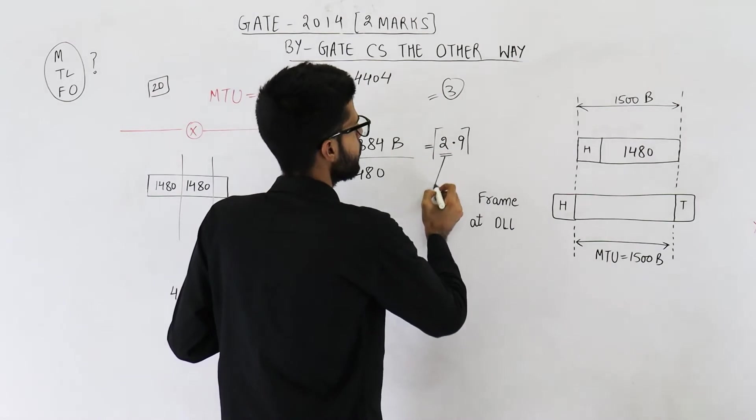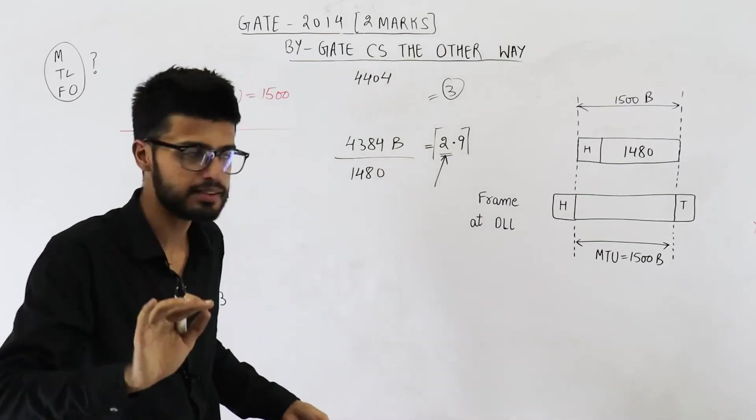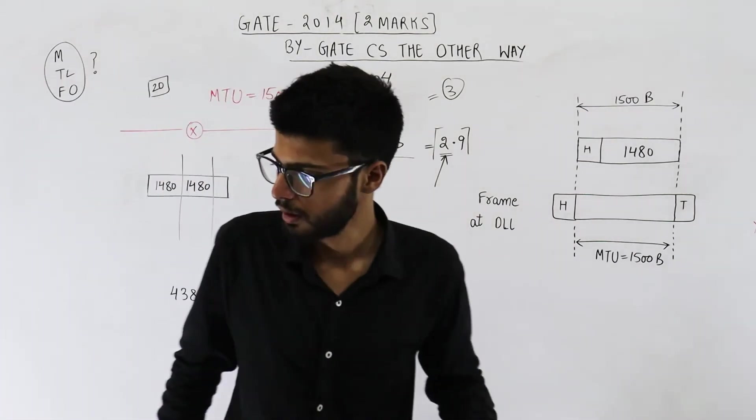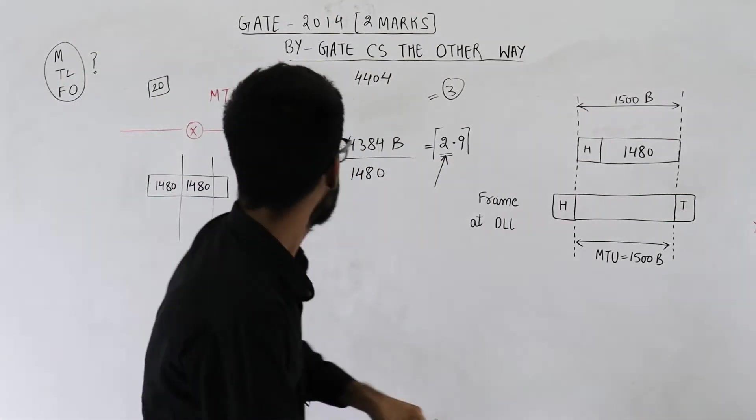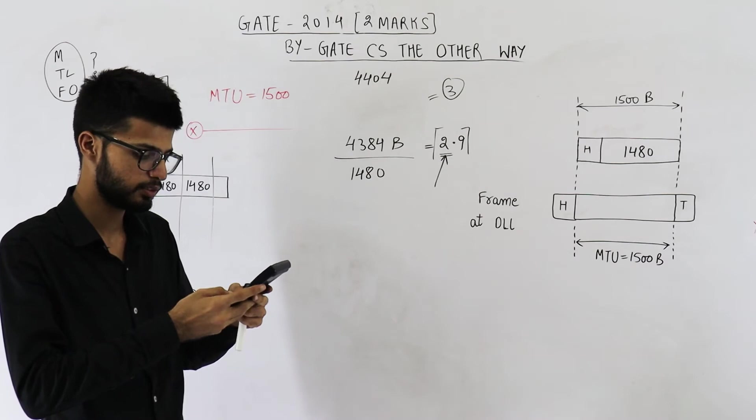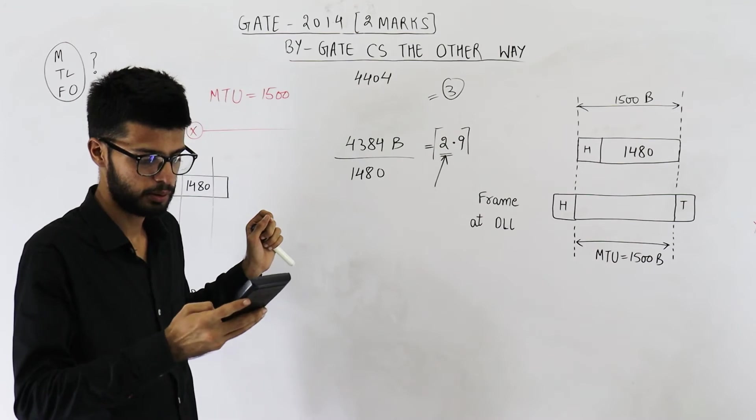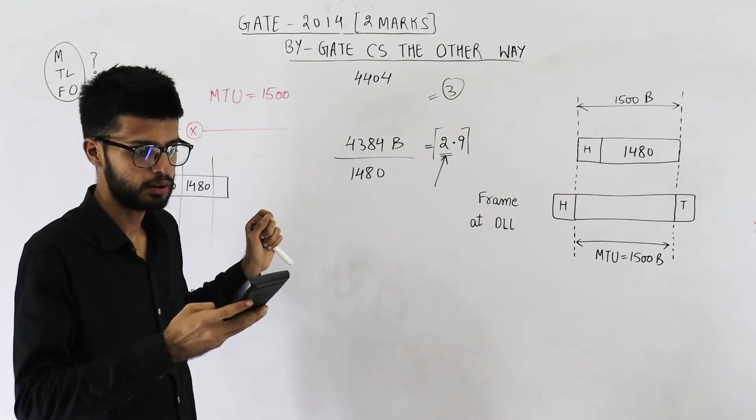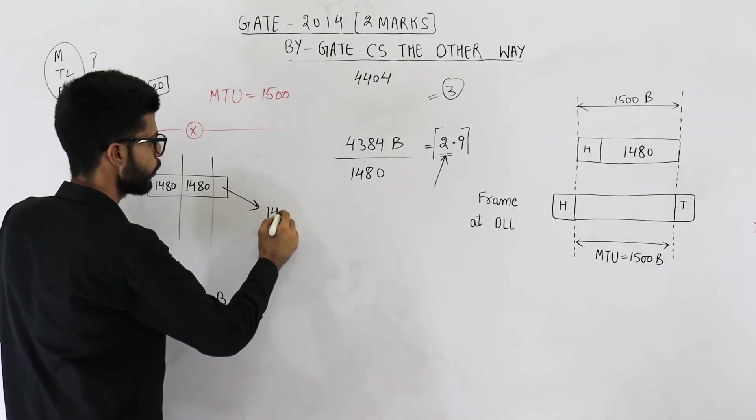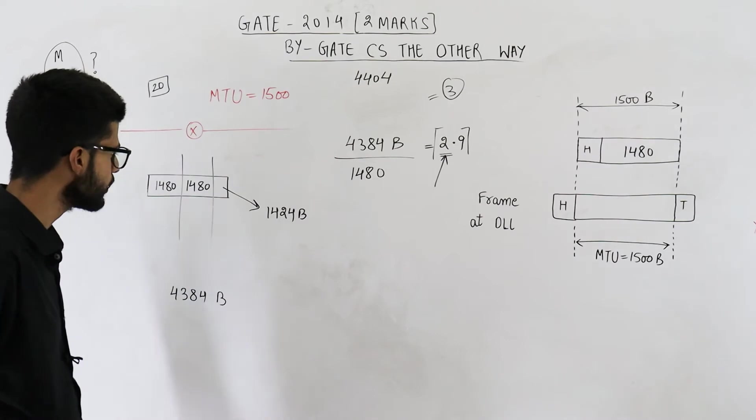See, two fragments are complete of 1480 bytes. The last fragment is smaller. Anyways this is a fragment, right. So total three fragments are there. Now see, let me just use the calculator to find out how much data is present in this. So first two fragments contain 2960 bytes. Total was 4384. 4384 minus 2960, this is 1424. That means this last fragment has 1424 bytes of data only. Maximum it can contain up to 1480.